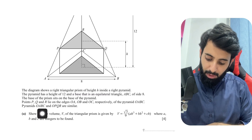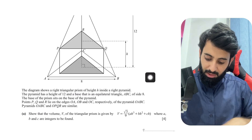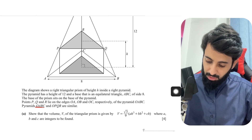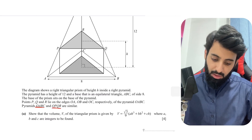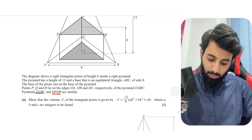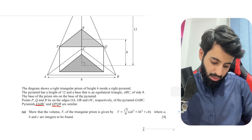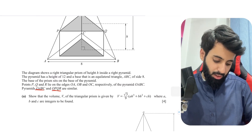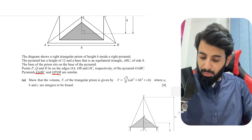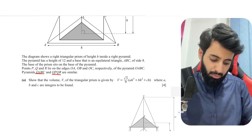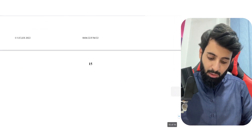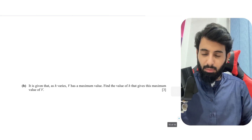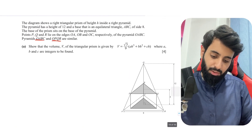Pyramids OABC and OPQR are similar — this is very important and I'll be using this later. Part A asks us to show that the volume of the triangular prism is given by V = (√3 / 9)(ah³ + bh² + ch), where a, b, and c are integers to be found. Once you've done Part A, Part B naturally becomes easier.